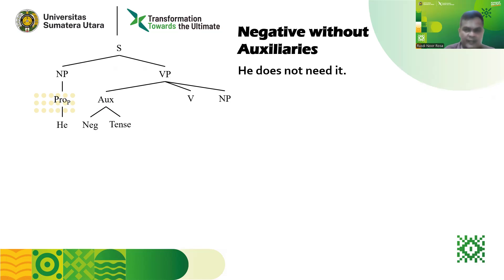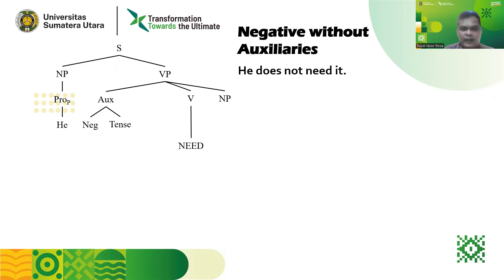In the previous sentence we analyzed, we had three branches of auxiliary — negative, tense, and modal — because we had a modal auxiliary. But here we don't have any main auxiliaries. So we have here the infinitive form of 'need,' and then we have NP represented by personal pronoun 'it.'